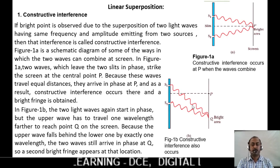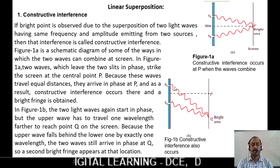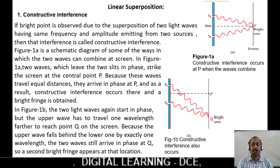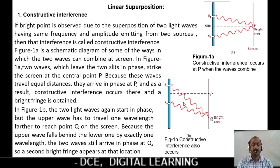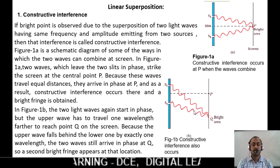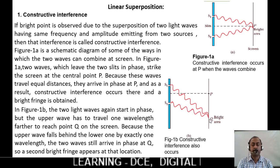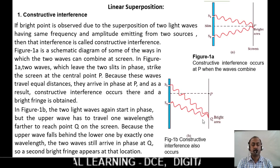In figure 1b, the two light waves again start in phase, but the upper wave has to travel one wavelength further to reach point Q on the screen. Because the upper wave falls behind the lower one by exactly one wavelength, the two waves still arrive in phase at Q on the screen, so a second bright fringe appears at that location.